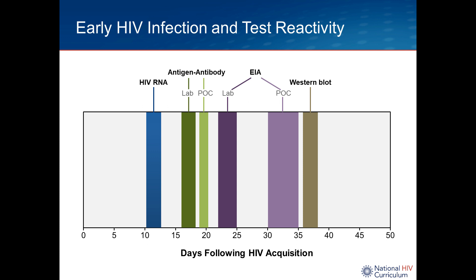Looking at this more linearly, the viral load is reliably positive by day 12 to 13, and often by day 10. The antigen-antibody P24 test is shown in green. One key point: the point-of-care antigen-antibody test detects HIV about three to five days later than the laboratory-based antigen-antibody test. If using conventional IgM/IgG laboratory-based antibody testing, that turns positive significantly earlier than with point-of-care tests — an important consideration when using point-of-care testing in settings where individuals may not return for results. The older Western blot is clearly the last to turn positive and can be delayed even longer.